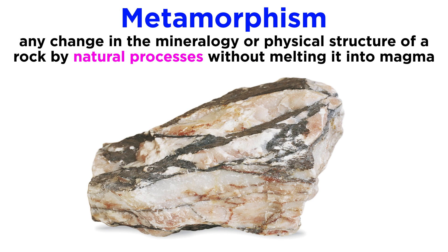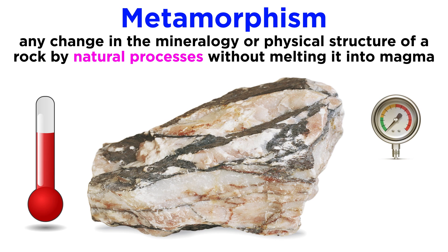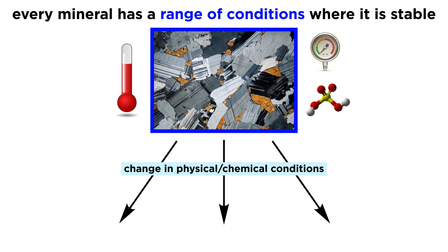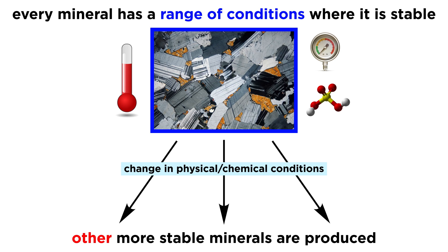Metamorphism is defined as any change in the mineralogy or physical structure of a rock, by natural processes, such as increased pressure and temperature, or the introduction of chemically active fluids, without melting it into magma. To truly understand metamorphism we must understand that every mineral has a range of physical conditions, such as temperature and pressure, as well as chemical conditions over which it is stable. When the conditions move out of a mineral's stability range, it will break down into other, more stable minerals.